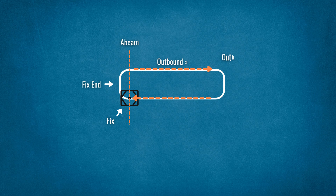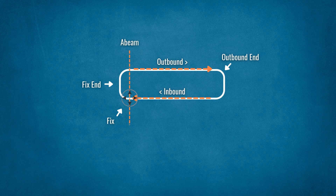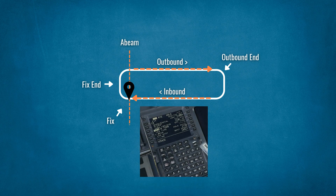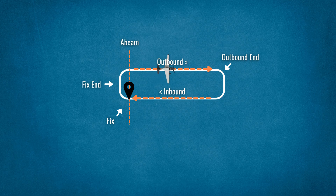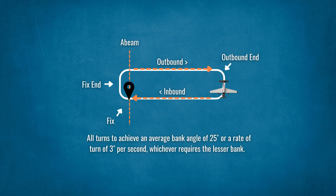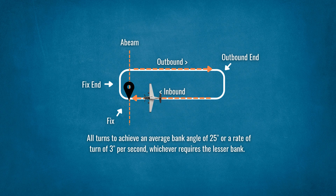The holding fix can be any of a VOR, a NDB, a radial DME fix, a specified waypoint, or in some circumstances, the current aircraft position as generated by the flight management system. After the completion of the appropriate procedure to enter the hold, all turns in a standard pattern are to the right. During entry and holding, pilots manually flying the aircraft are expected to make all turns to achieve an average bank angle of 25 degrees, or a rate of turn of 3 degrees per second, whichever requires the lesser bank.